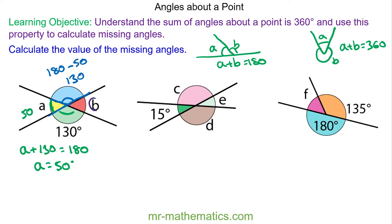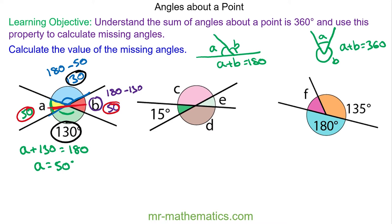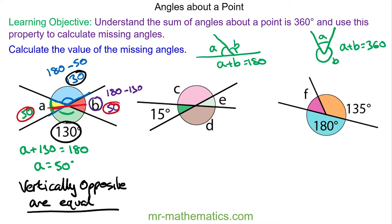We can work out angle b because it lies along the same straight line as the blue angle, so that would be 180 take away 130, which will be 50. So you can see we have pairs of angles which are equal — a and b, and we have 130 and 130. These are called vertically opposite angles, and vertically opposite angles are equal. We can use this property throughout the lesson.